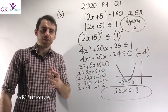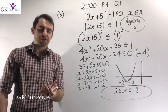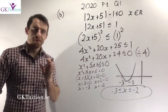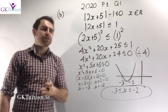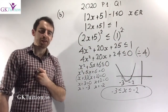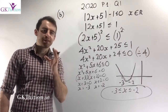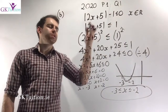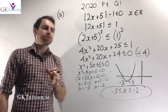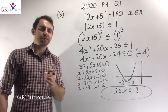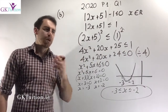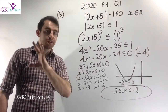In the final part of this question, we're dealing with a modulus. For more questions on this, go to Algebra 15 on the website. We're asked to find the range of values of x for which the modulus of 2x plus 5 minus 1 is less than or equal to 0. First, isolate the modulus — add 1 to both sides. When you have a modulus with an inequality, the easiest way to eliminate it is to square both sides.